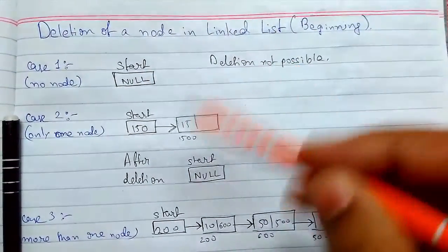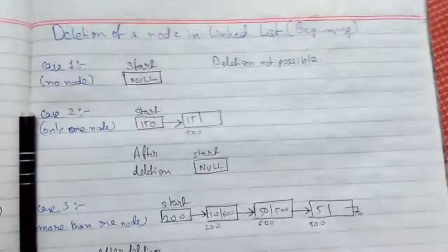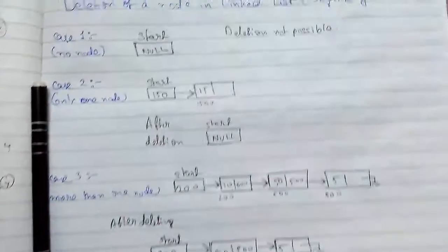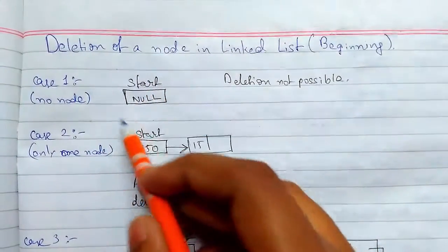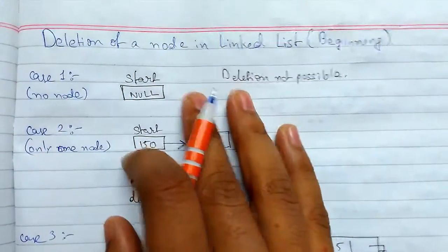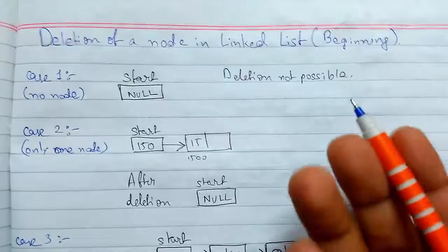So we will delete a node from the beginning. I have just made the cases for it. So I will just explain all this one by one. So the first case, when there is no node present in the linked list, deletion is not possible. You know that.